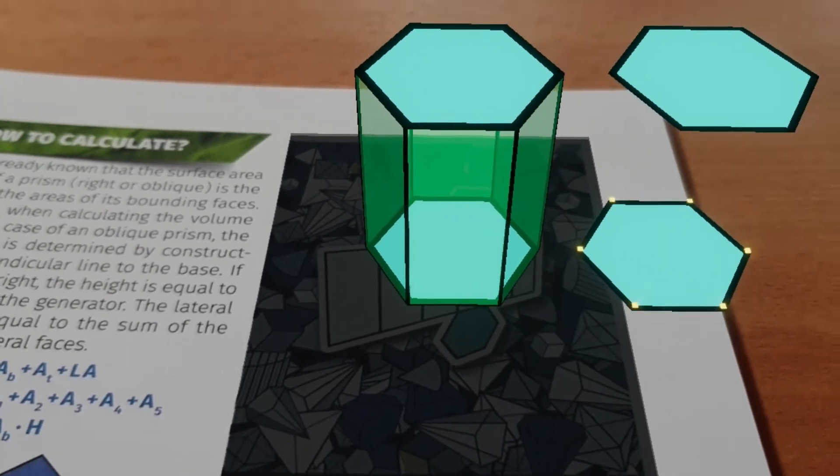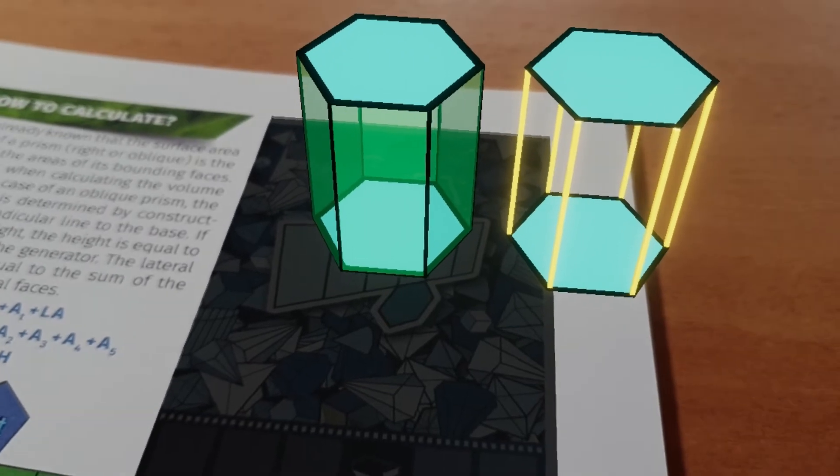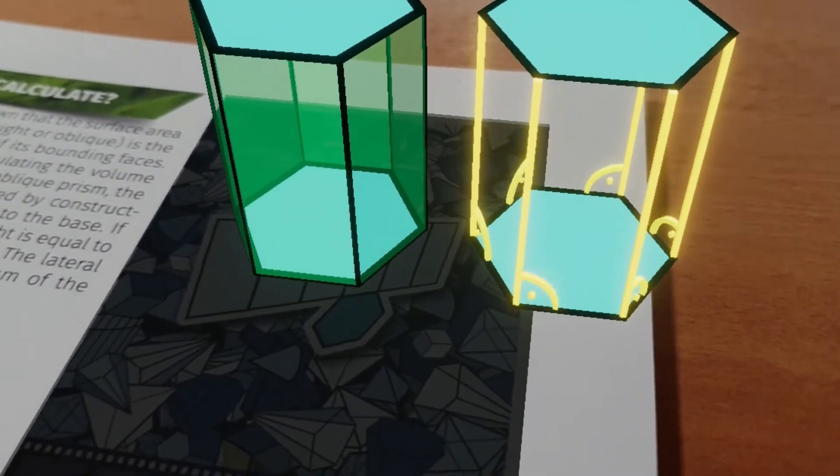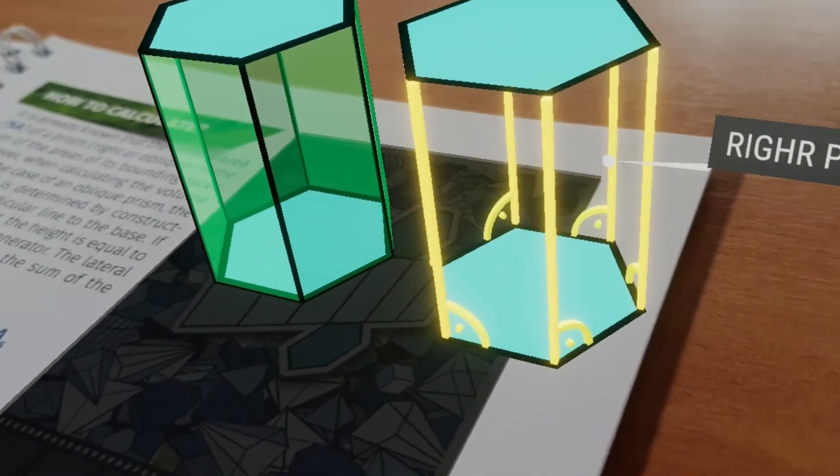The lateral edges are the line segments connecting the corresponding vertices of the bottom and top bases. If the lateral edges are perpendicular to the plane of the base, it is a right prism.